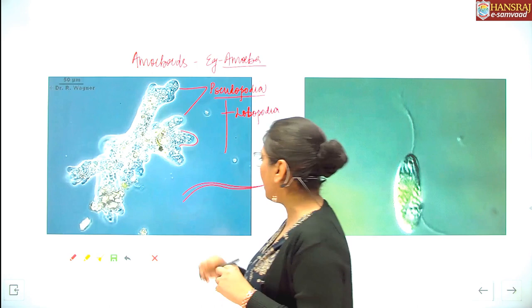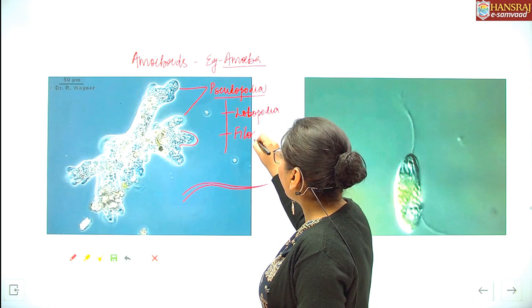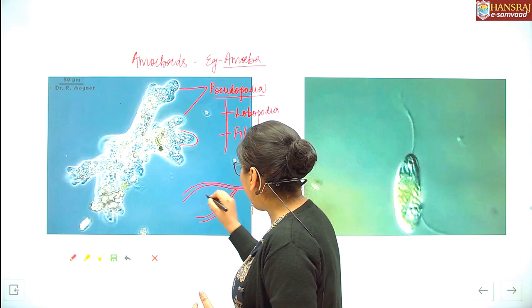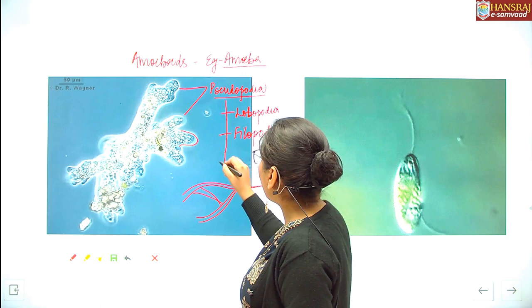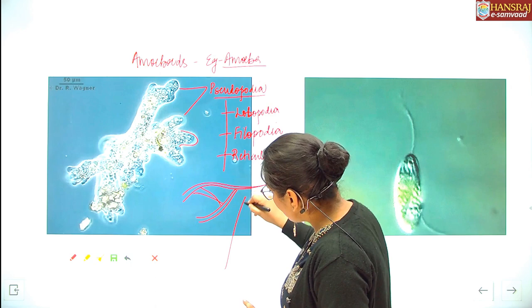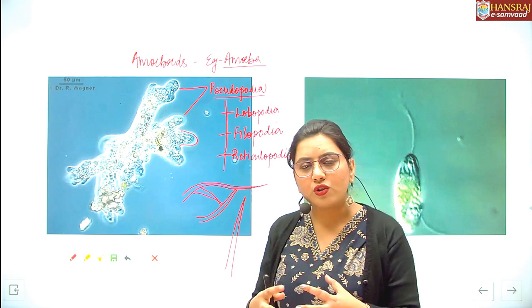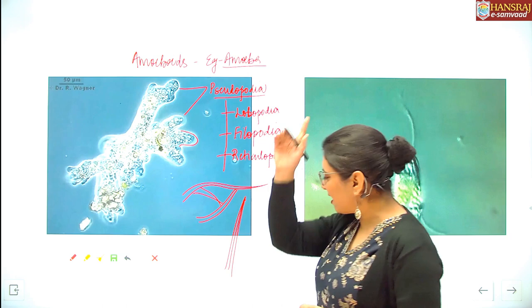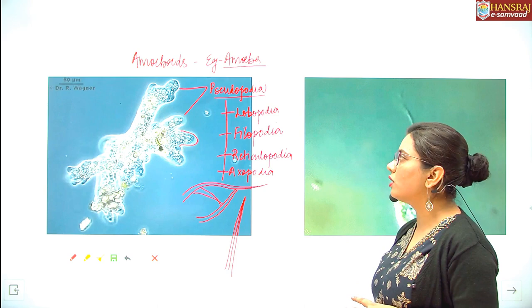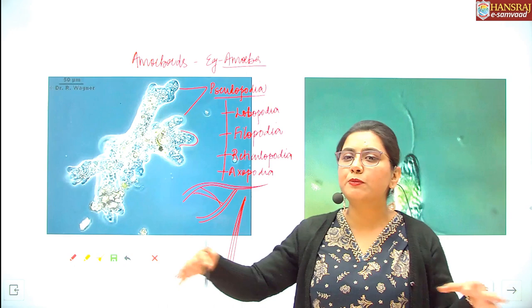When pseudopodia are thin and filamentous, they are called filopodia. When slender filamentous pseudopodia form a network pattern, coalescing into a net-like pattern, that kind is called reticulopodia. Lastly, when there is deposition — calcium carbonate, strontium sulphate — in the protoplast creating a straight-axis pseudopodium, that is called axopodia. So from one single-celled organism you find lobopodia, filopodia, reticulopodia, and axopodia, giving rise to different types of amoeboids.